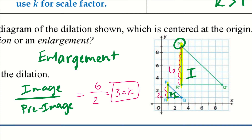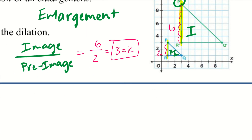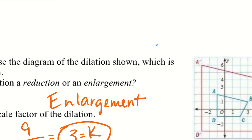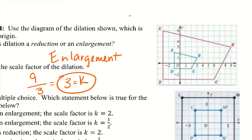Go ahead and try examples 3 and 4 — pause the video and try those problems. For example 3, we decided it was an enlargement: I looked at where the prime marks were to identify the image. The image is bigger, so it's an enlargement. Then I counted A to D was 9 on the image and A to D was 3 on the pre-image, giving a scale factor of 3.